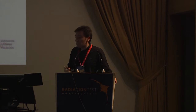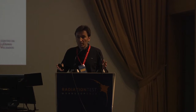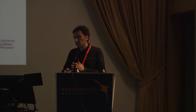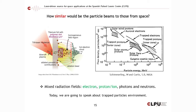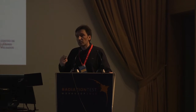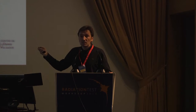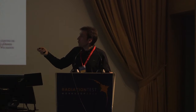The space radiation environment is complex, as you know better than me. There are many particles with a very broad energy range. For instance, very high-energy protons are not going to be achievable with a laser at this moment, but that will come in the future. What we have is a mixed radiation field with electrons, protons, ions, photons, and neutrons in space — and this is also what we are able to produce with the laser.